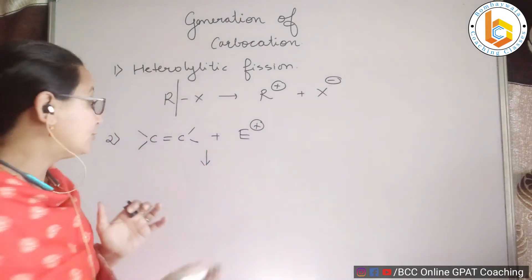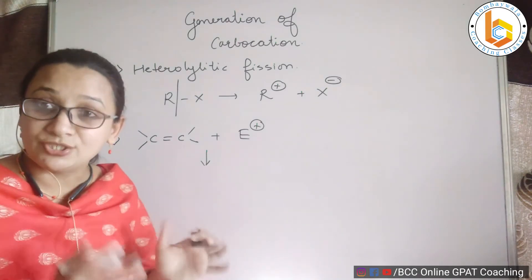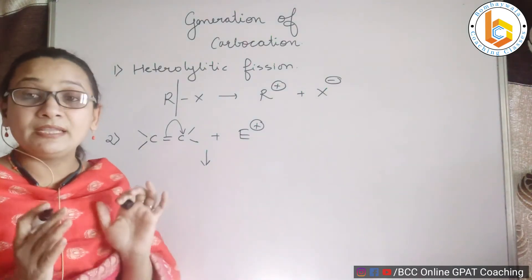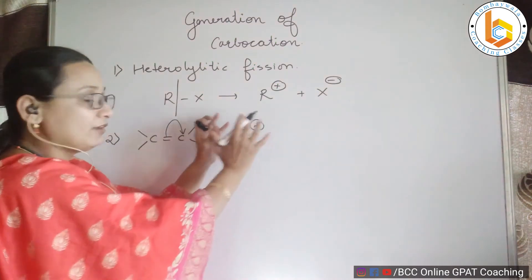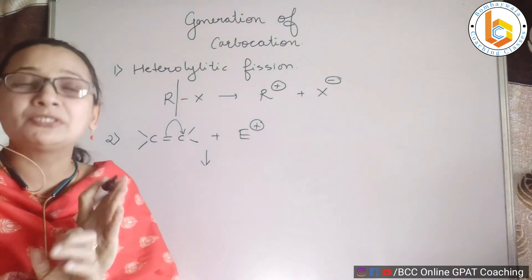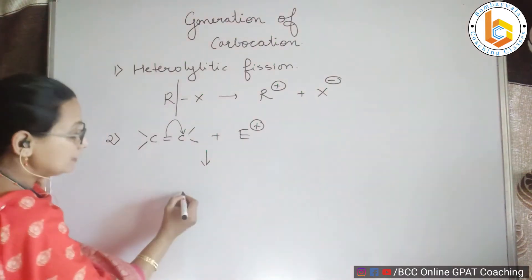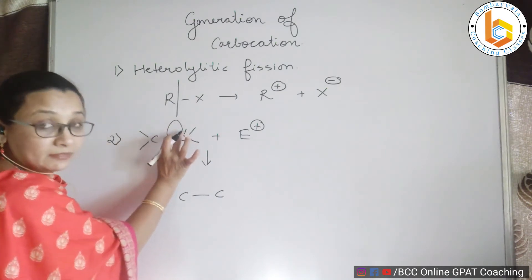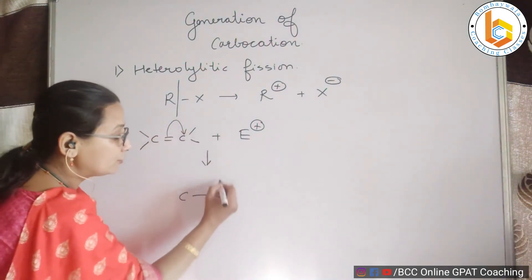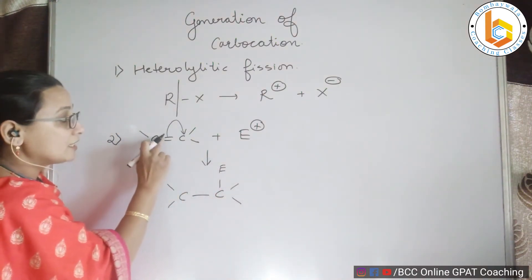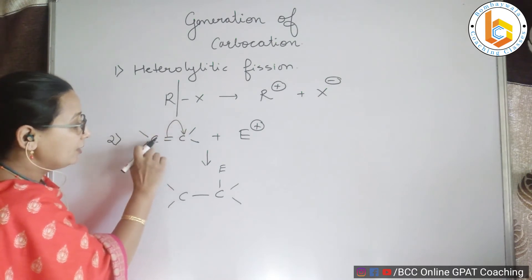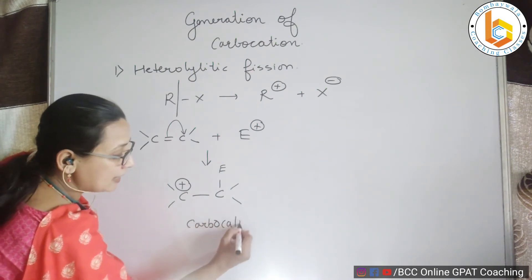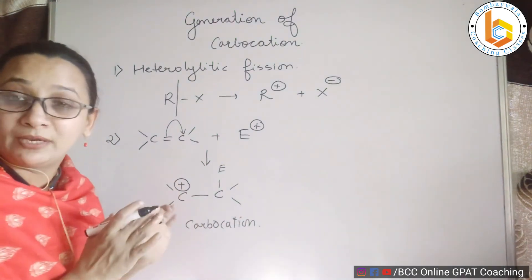What happens is that in the presence of an electrophile — the electron-loving reagent — the double bond electrons move onto one of the carbons. Because of this shift of electrons, that carbon's electron density increases and the electrophile, which carries a positive charge, comes and attaches there. So what is formed here is a carbocation, by the effect called the electromeric effect.